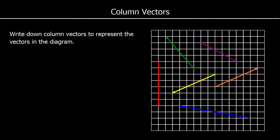OK, some for you to try. So pause the video and try and write down the column vectors for each of the ones shown in the diagram. So I'm going to start with the orange one this time. So it goes to the right 6, up 3. So it's 6, 3.